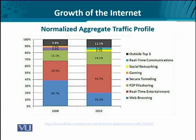Here you can see that of the dominant applications and software in 2009 and 2010, real-time entertainment contributed the major part. But in 2010, there is a significant increase in peer-to-peer file sharing such as torrents. What it means is that in coming times, the peer-to-peer architecture of the Internet seems to be dominating the network applications part.